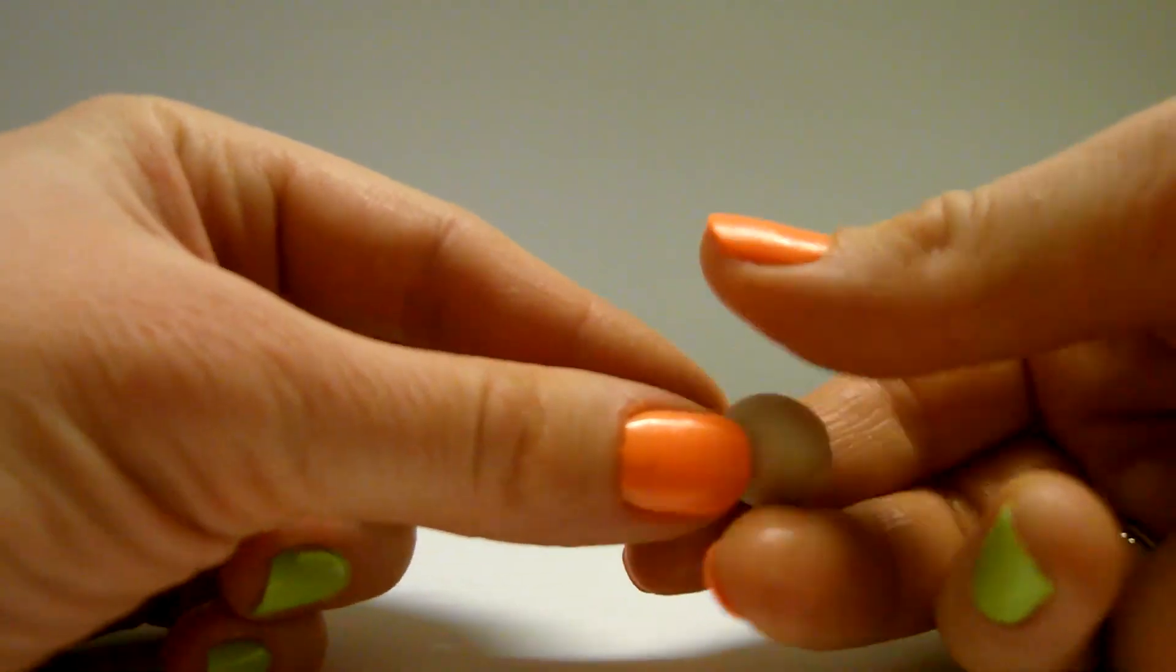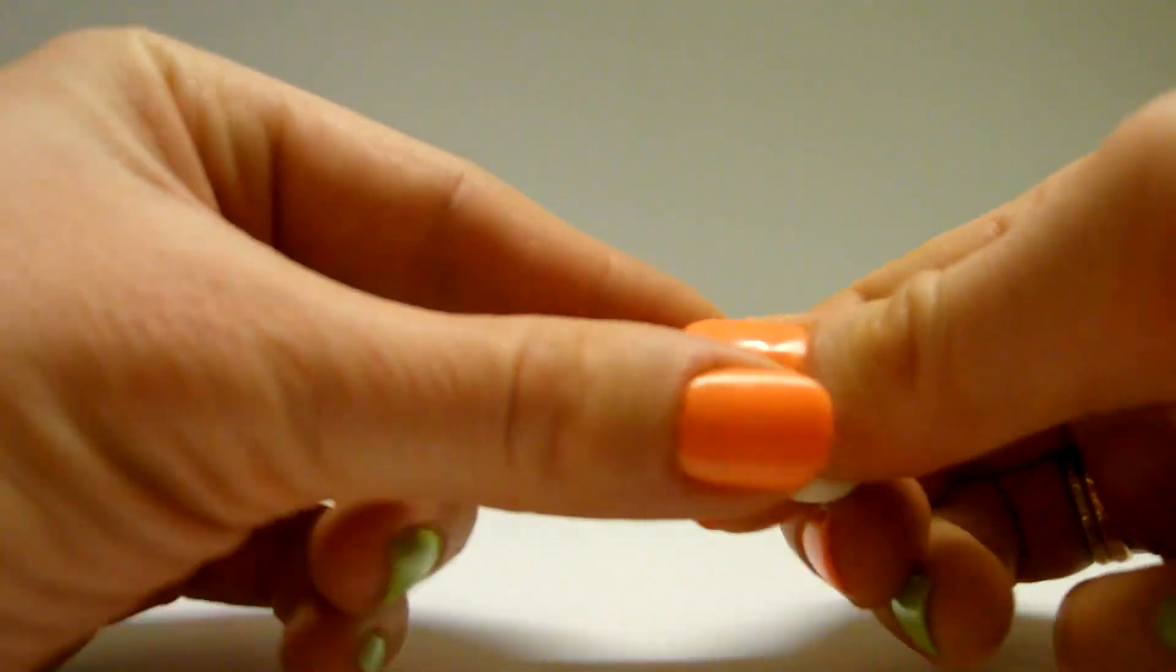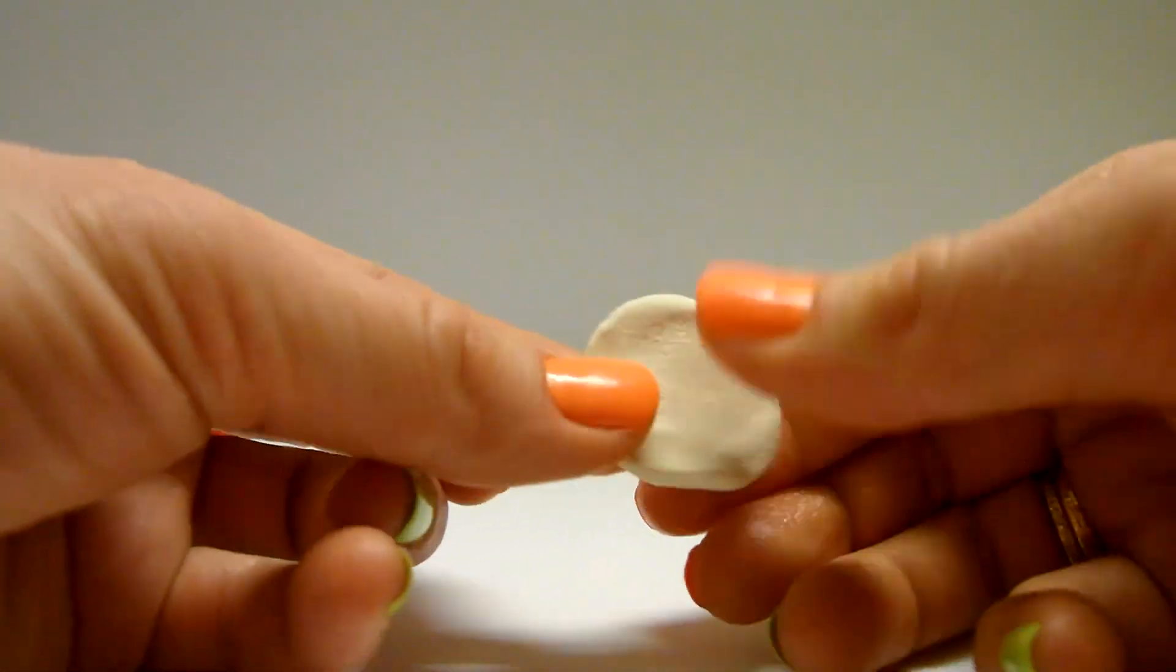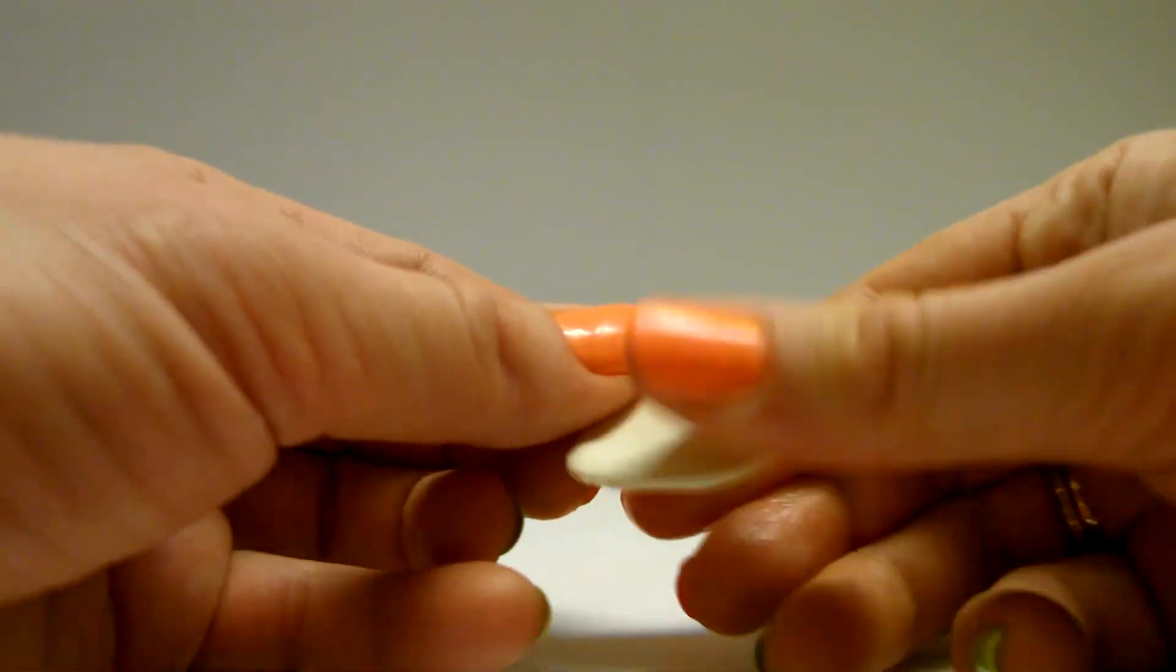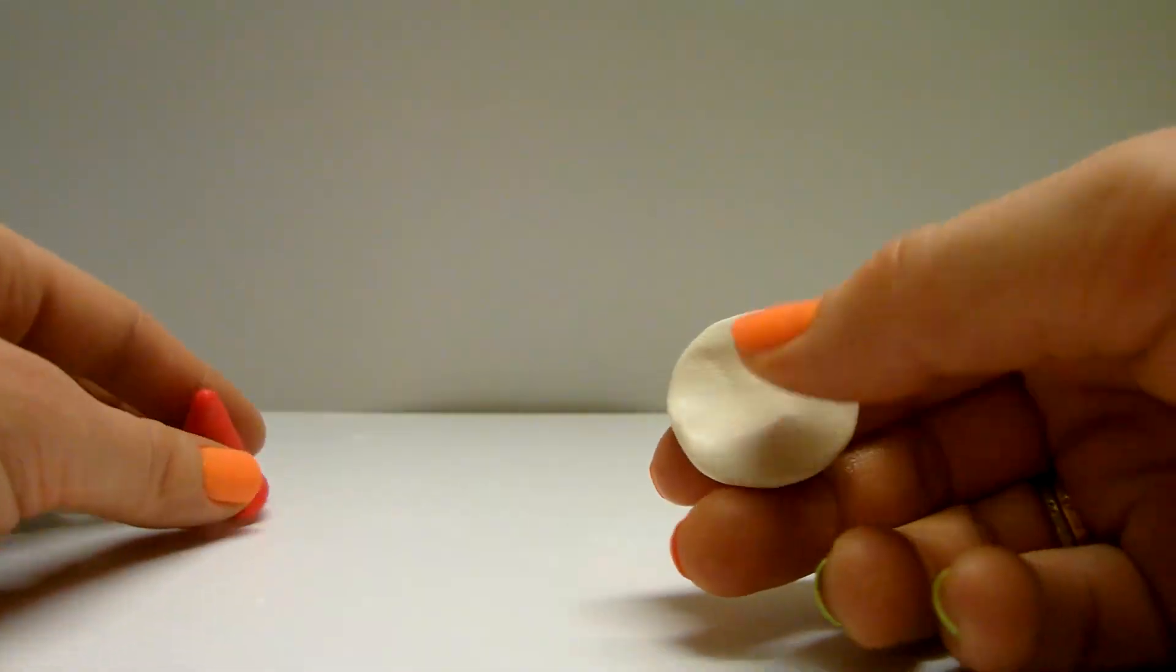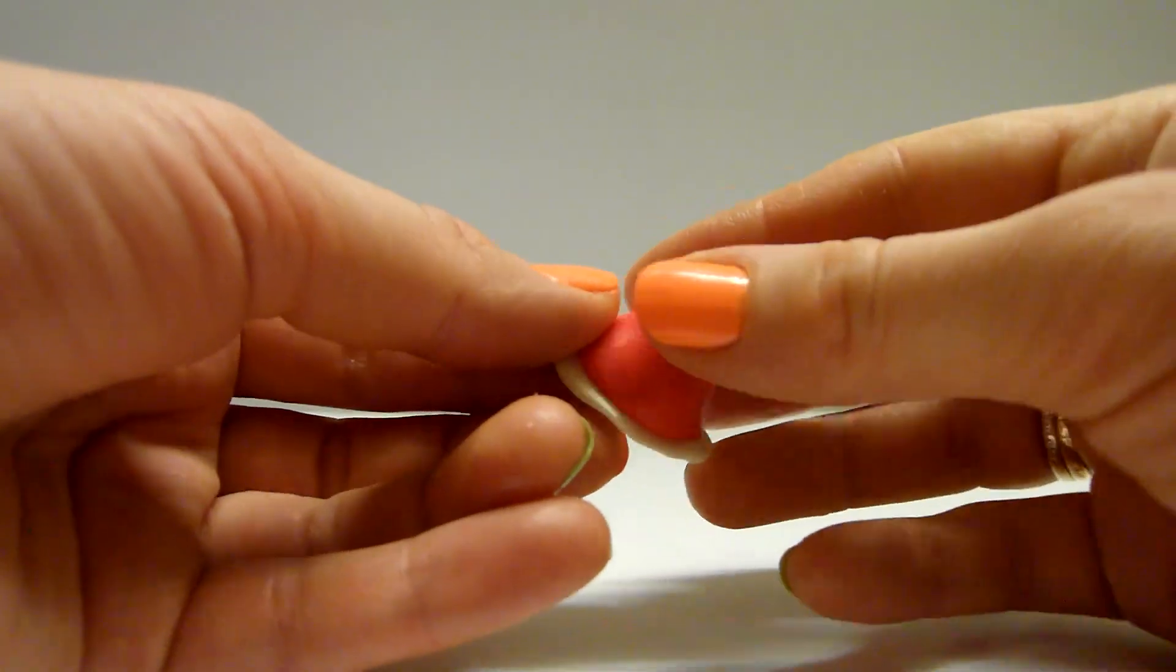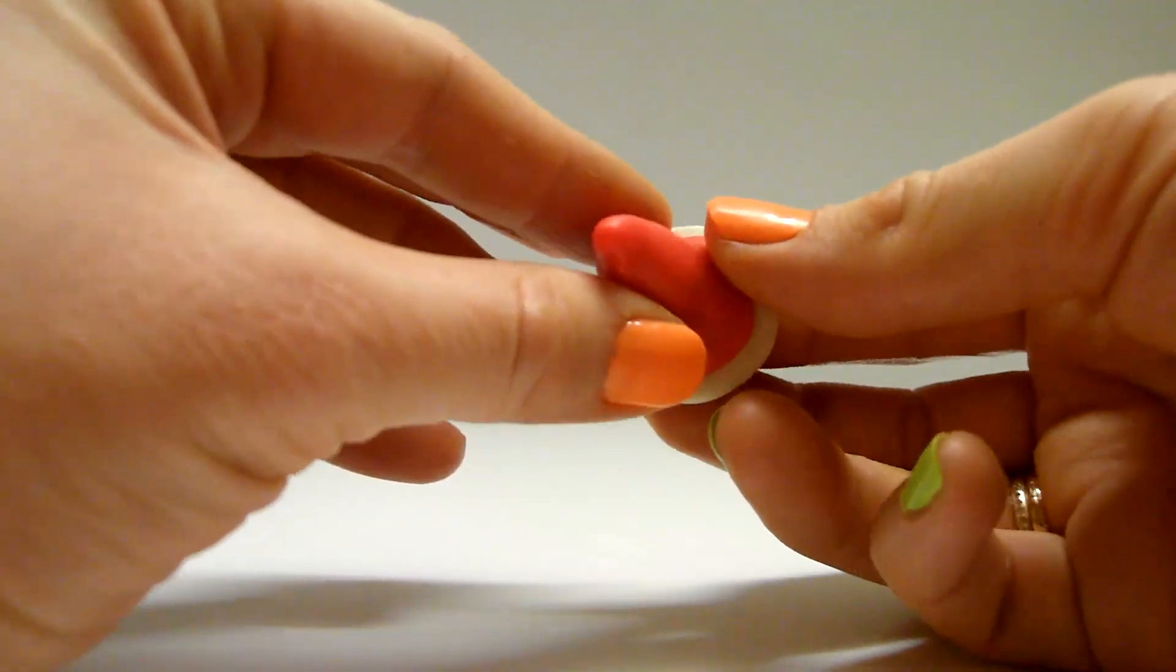Now, let's make edges. Create a ball of white clay. Flatten it. The diameter should be a bit bigger than a cap diameter. And fix it under the cap bending the edges.